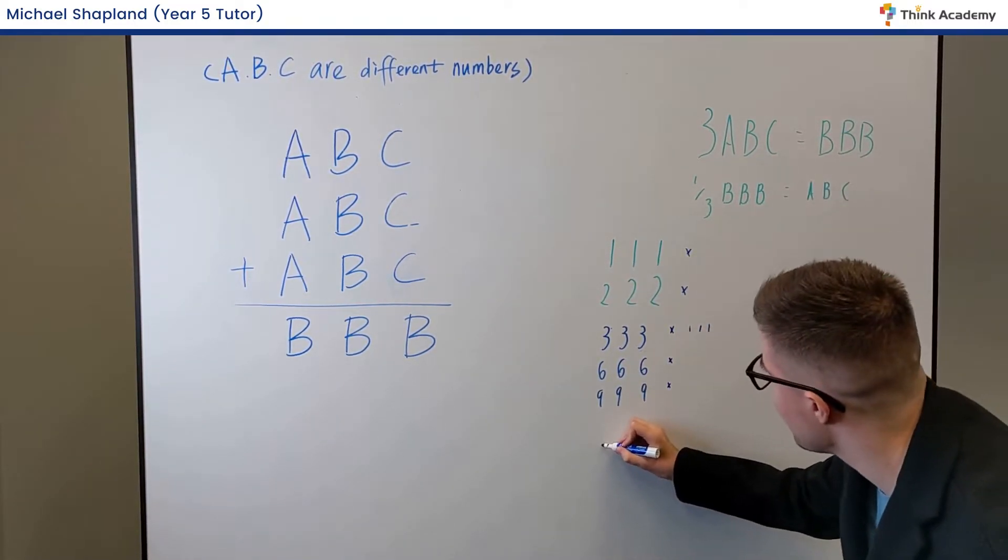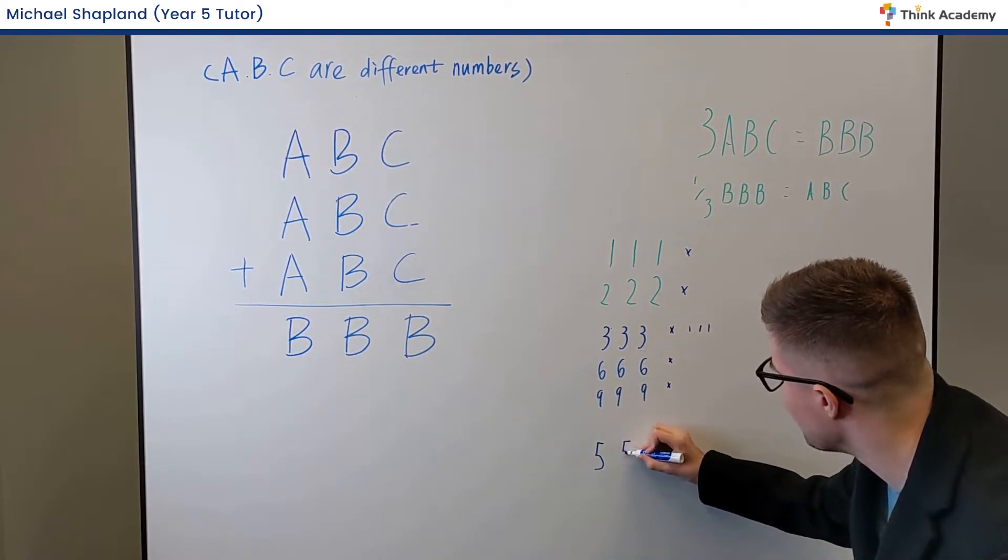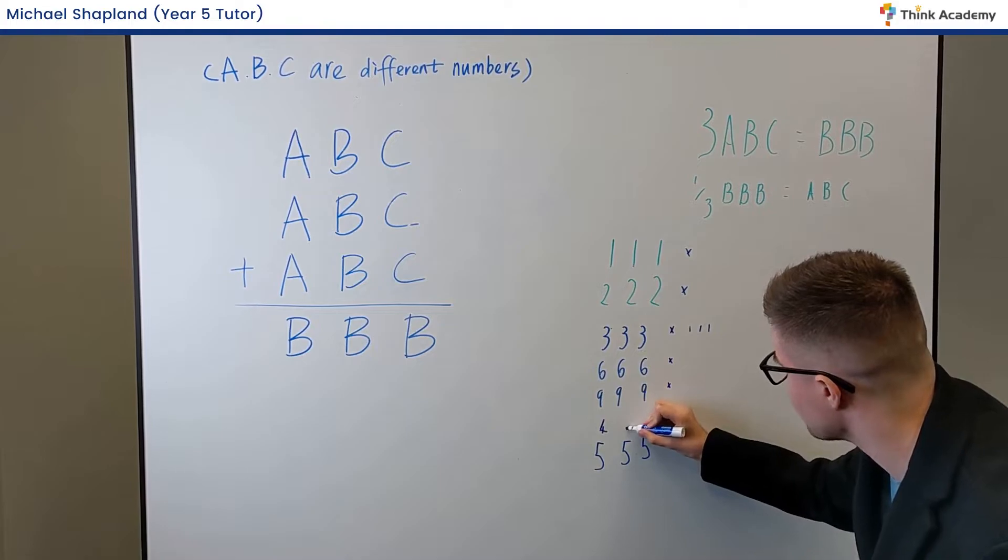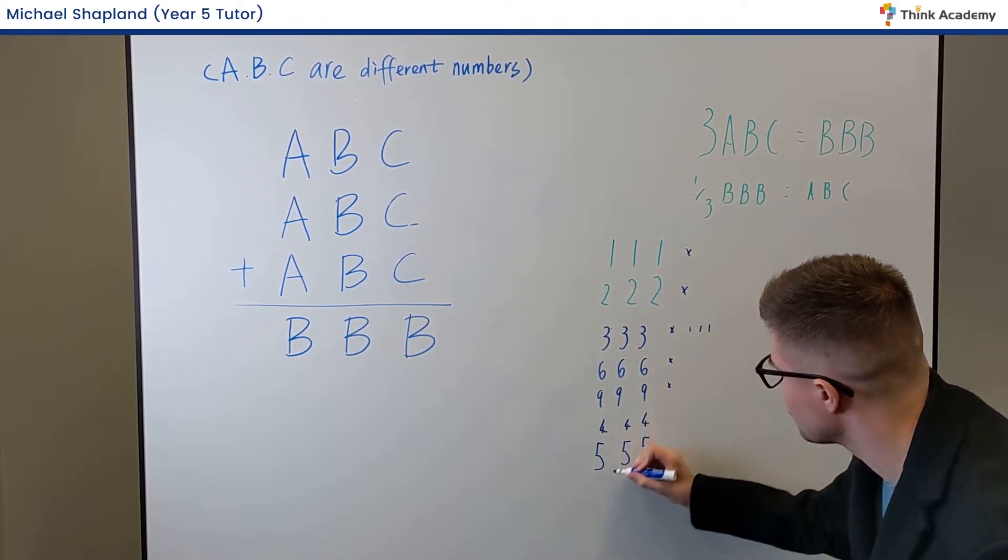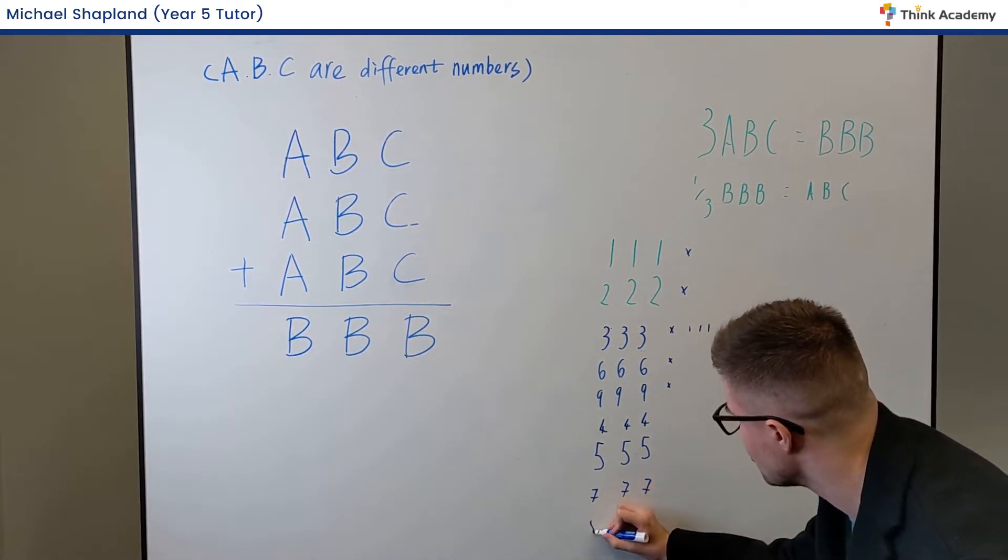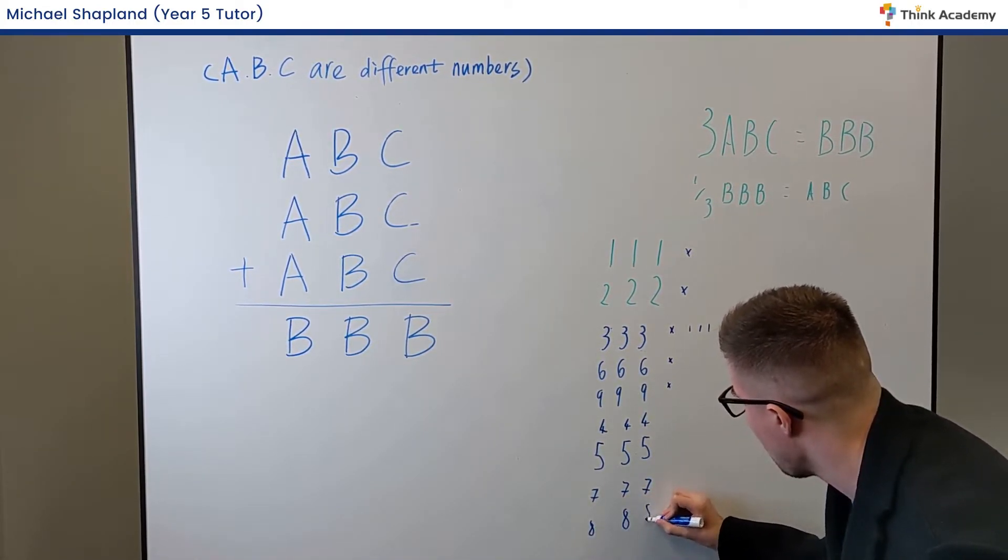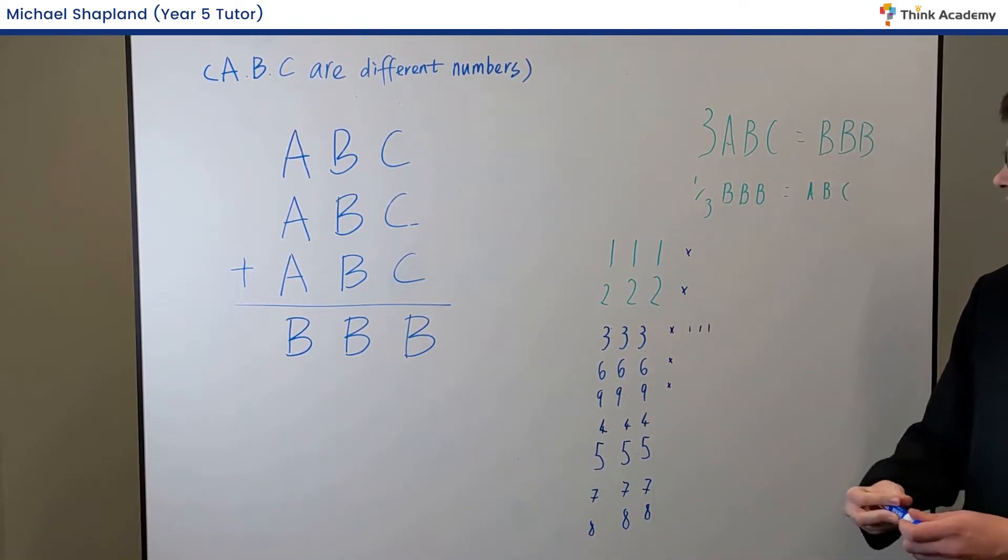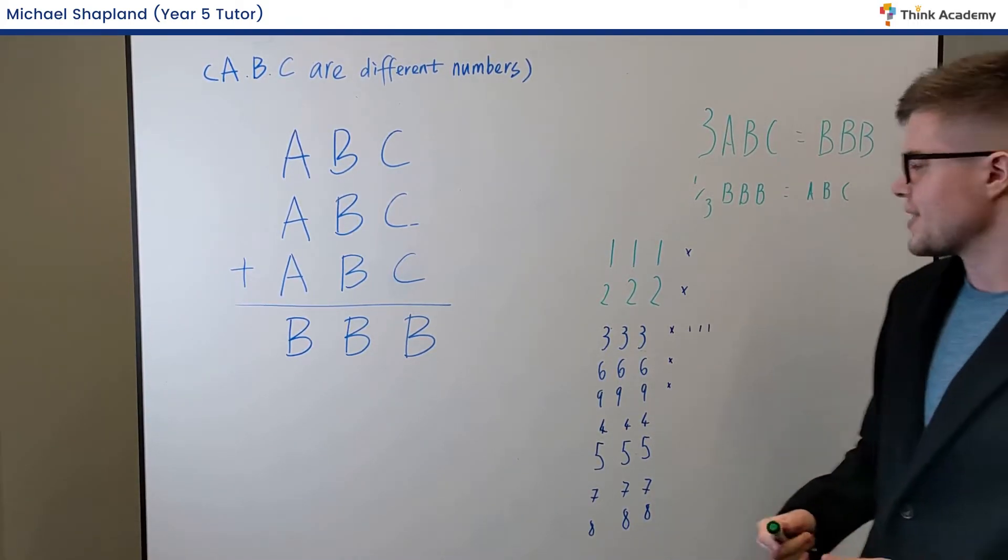So we are left with these final numbers: 555, 444, 777, and 888. One of these we can eliminate with another strategy. That is 555. Why is that?